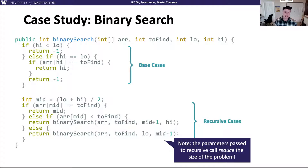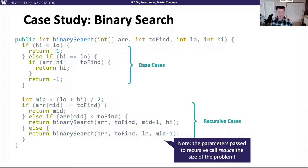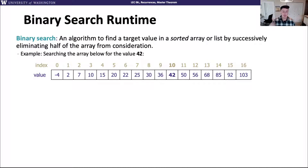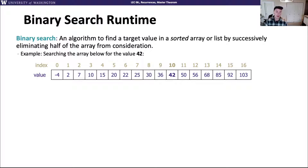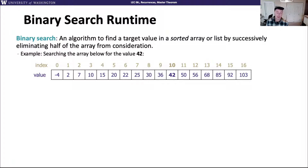The if-else statements make a recursive call, and importantly, every time you call one of these methods, the parameters you pass in reduce the size of the problem. In binary search, we always cut the array in half, eliminating half the array every time. That's why we say it falls in this first pattern of halving the input. Every recursive call, we're looking at a smaller and smaller section of the array. Binary search is an algorithm to find a target value in a sorted array, and that sorted keyword is really important.